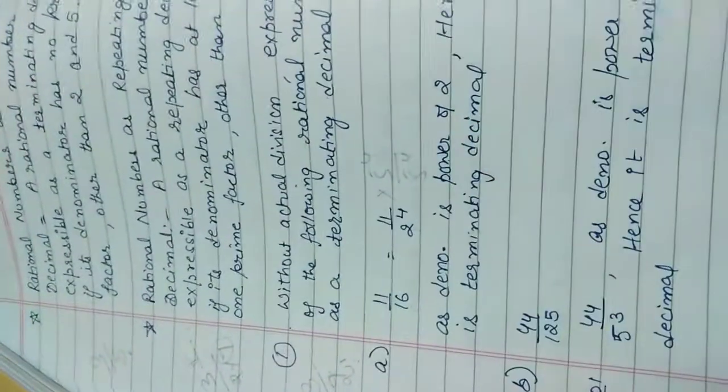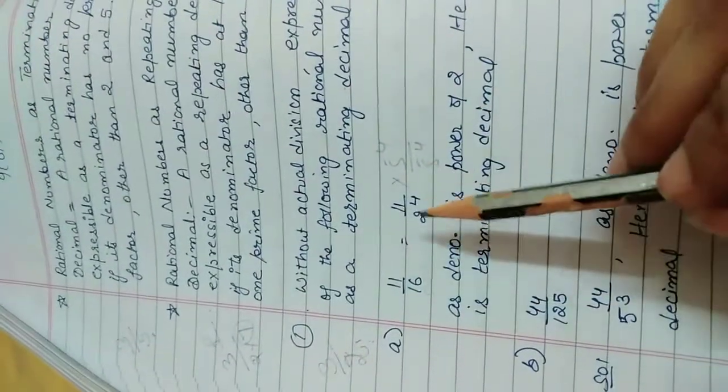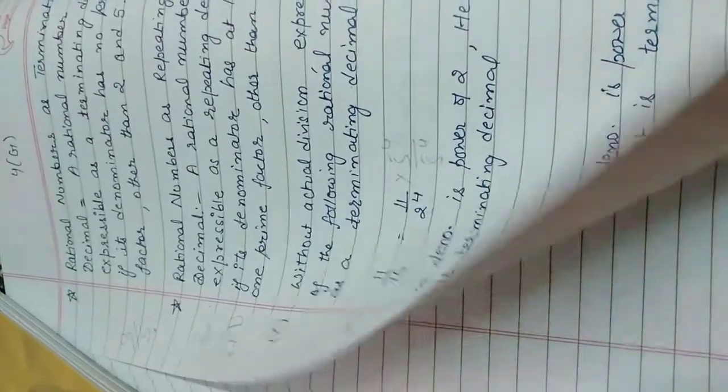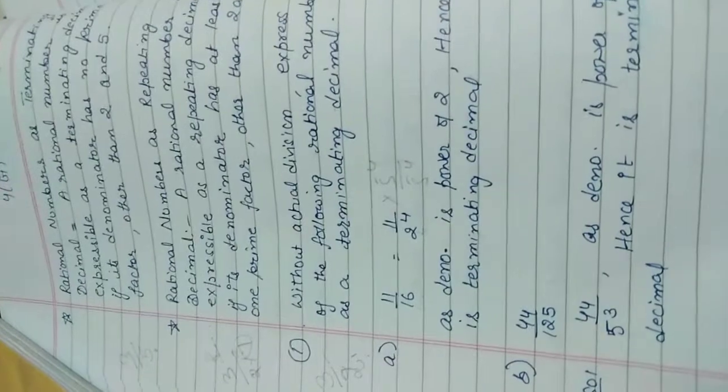Then definitely we will get its final answer. But here only we have to tell in the form of yes or no and why. For why you can say as the denominator is in the form of a factor of 2, that is why it is terminating.